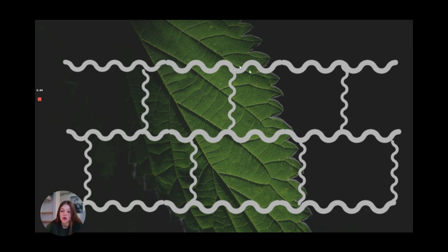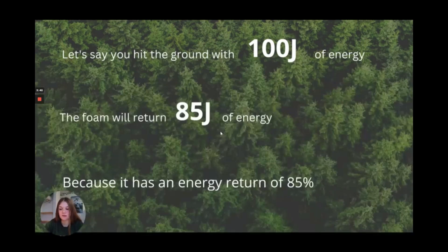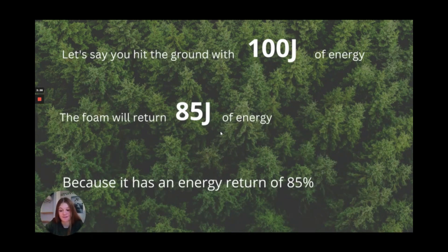That's exactly what happens with foam. You push down on the shoe, and then you go flying. Now, PBACS has a very high energy return, 85%, so basically, if you put down 100 joules of force, it's going to return 85 joules. Most shoes can only return 50 to 60%.